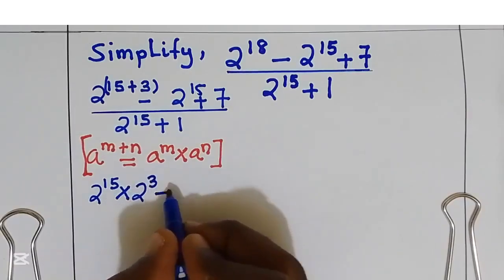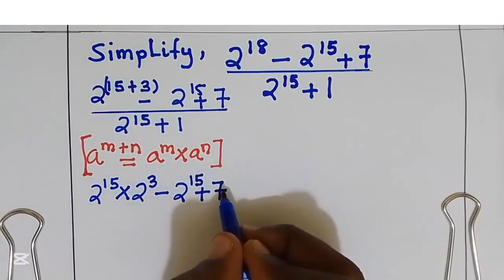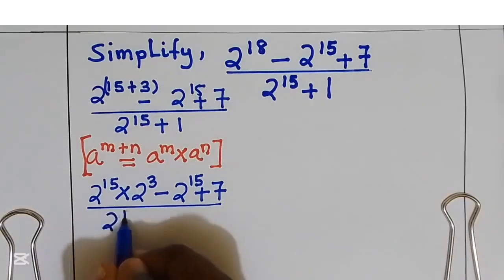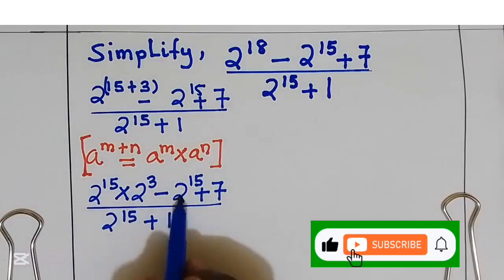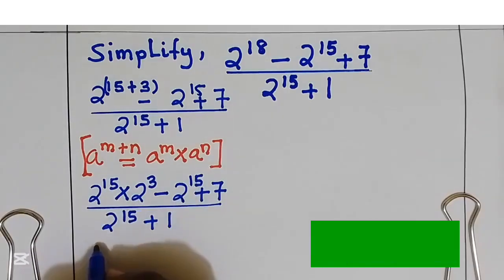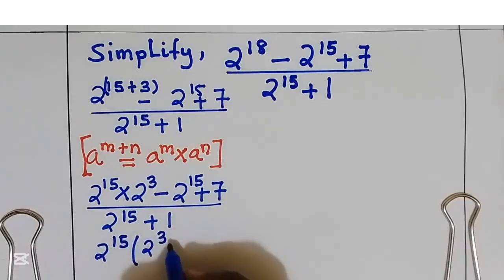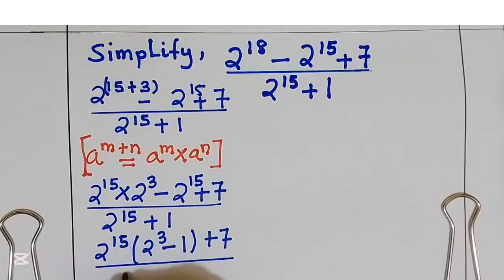Take away 2 power 15 plus 7, divided by 2 power 15 plus 1. I can factor out 2 power 15 on the numerator. 2 power 15 remains, then 2 power 3 minus 1, plus 7, all over 2 power 15 plus 1.